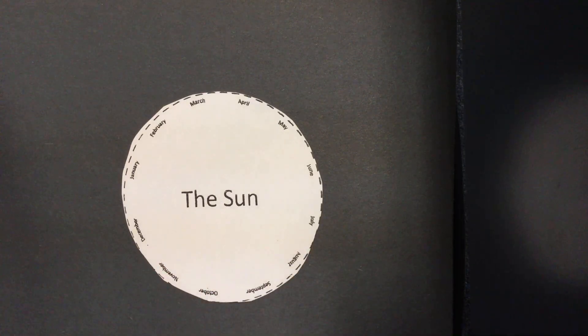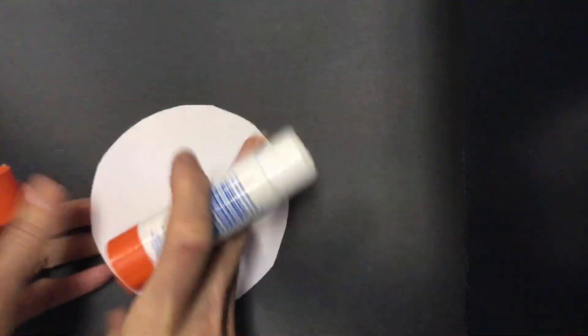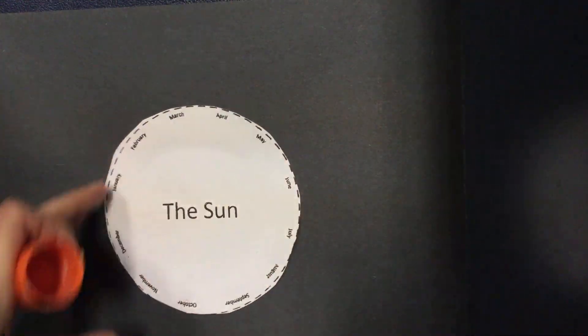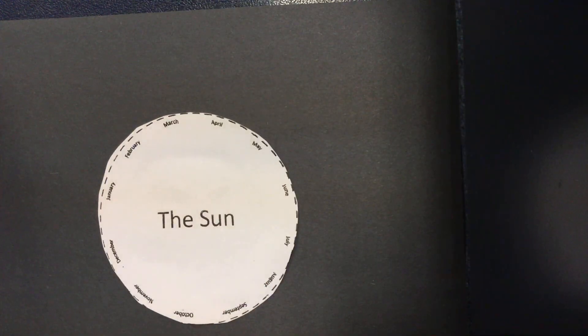You can color your Sun yellow, and you want to make sure—I have it on a black piece of paper, but you can just put it on whatever paper that you happen to have. You can glue the Sun in the center after you colored it yellow. Make sure that is facing this way where the words 'the Sun' are correct, because as you notice, the months of the year are around it.